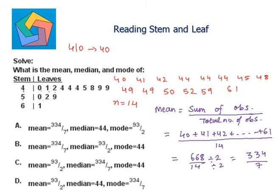For the median: this is an even data set since it contains 14 observations. The median will be the average of the two middle values. The two middle values are 45 and 48, so the median is (45 + 48) / 2, which equals 93/2.